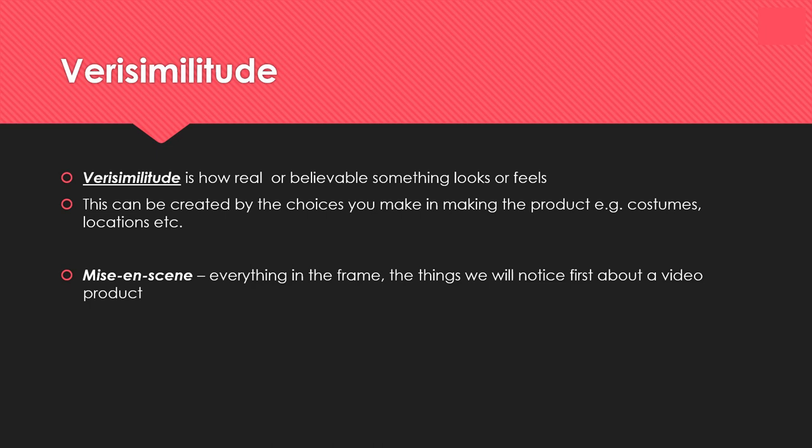One of the effects you might want to achieve with the audience is verisimilitude. Verisimilitude is when something is believable — how real or believable something is. To achieve verisimilitude, you need to think carefully about the mise-en-scene elements. How can you make something look professional but also realistic and believable? If you think about costumes, locations, and all that kind of stuff, you can make something look believable and real.